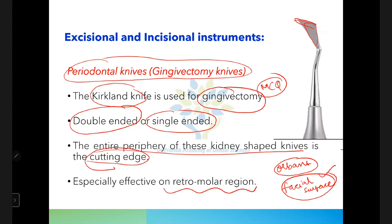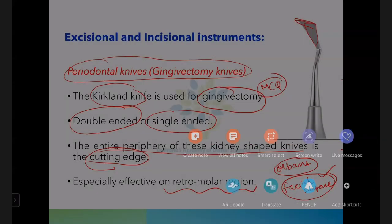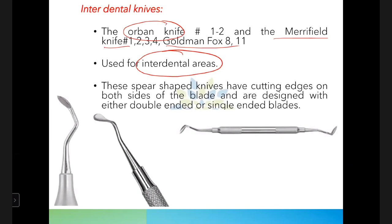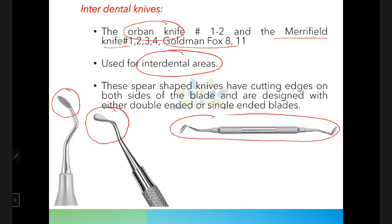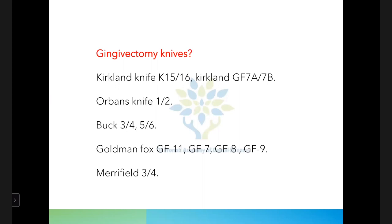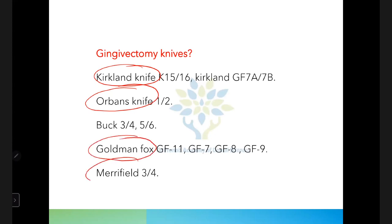Orban's knife, Merrifield's knife, and Goldman Fox knife are used for interdental areas. The Orban's knife is spear-shaped with cutting edges on both sides. Remember these three names: Kirkland (facial surface), Orban's, and Merrifield (interdental areas). Buck's knife is also in this category.